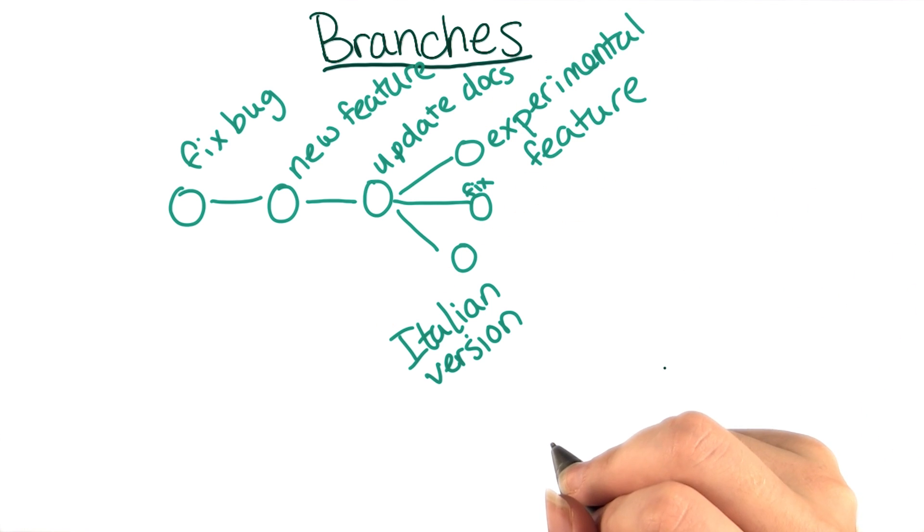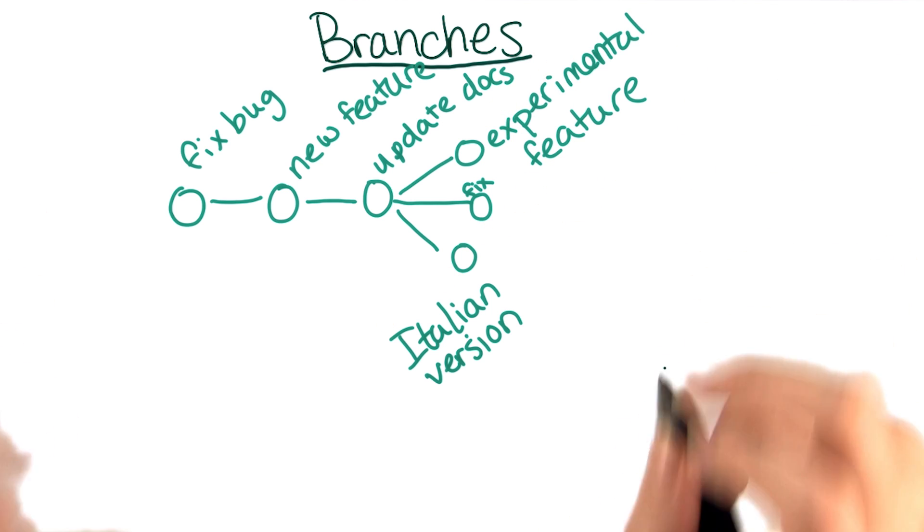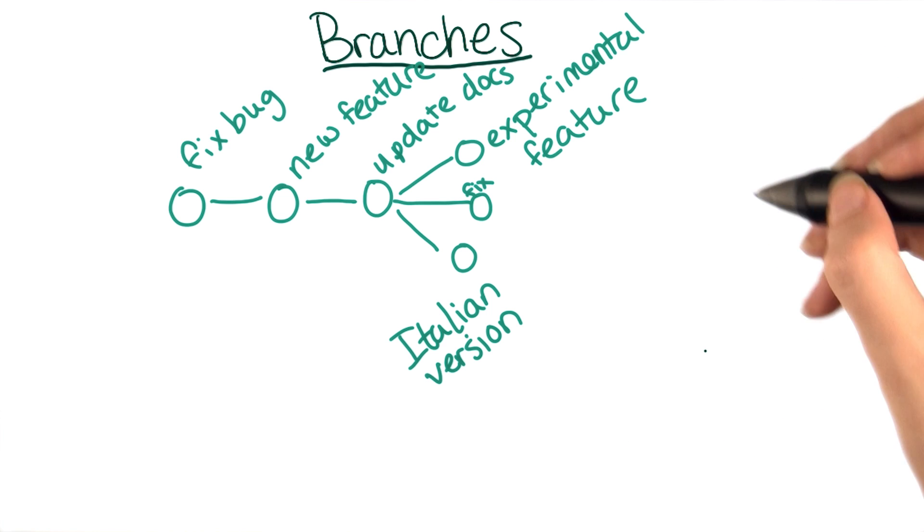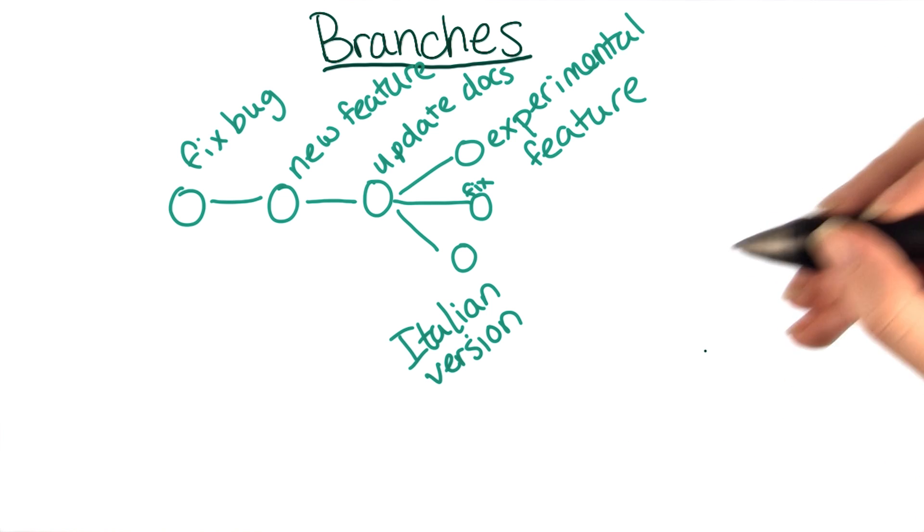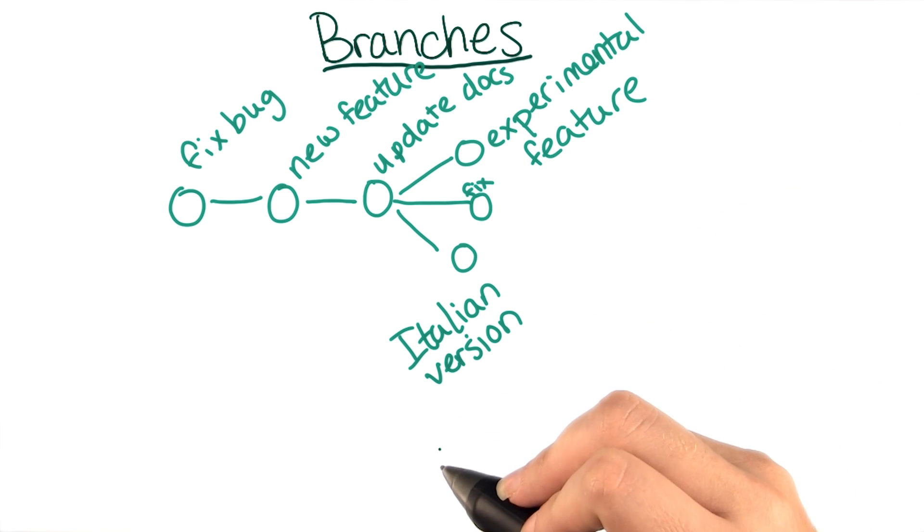Remember how in last lesson, when you checked out some old commits, you would get the detached head message? Basically, at that point, git was warning you that you were looking at a commit that was not labeled with a branch name.